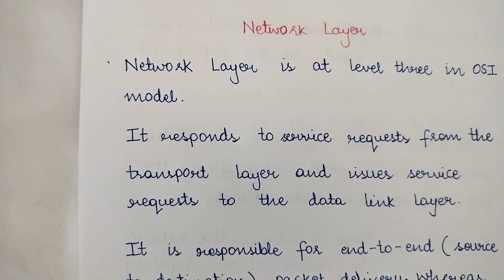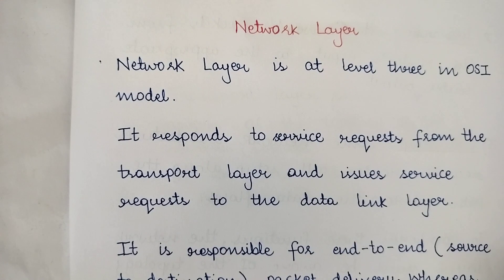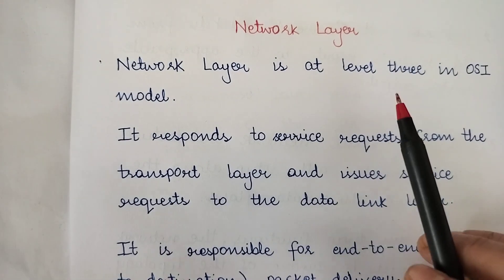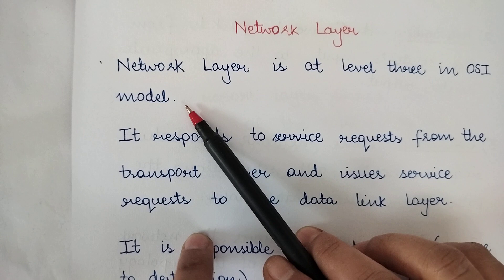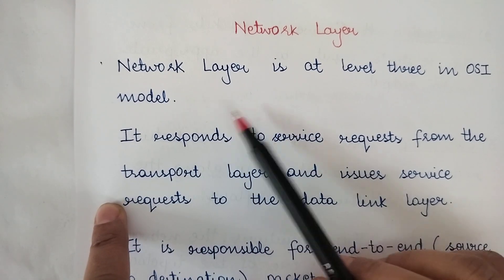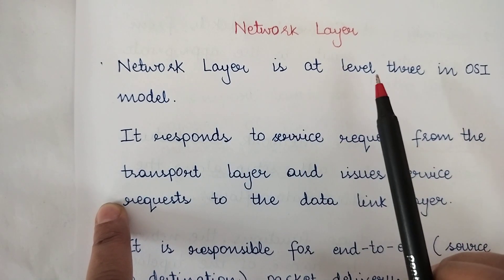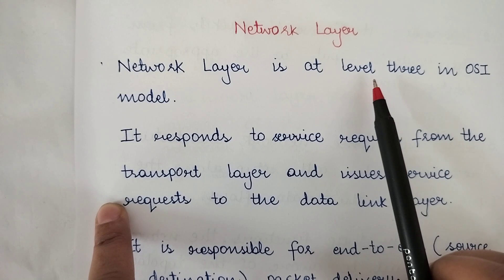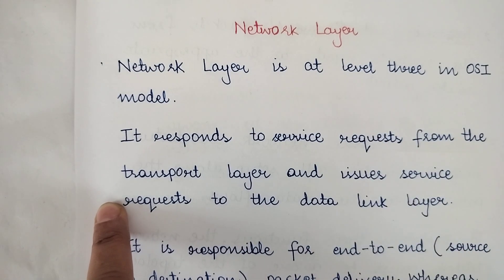Hi everyone. Today we are going to study the network layer. The network layer is the third level in the OSI reference model. We have the physical layer at the first level, the data link layer at the second level, and then the network layer at the third level.